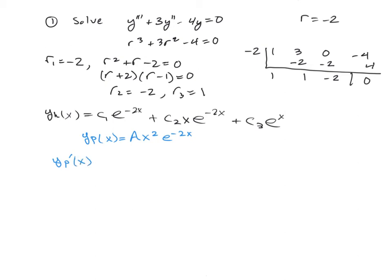Alright, so now first derivative using product rule. That's 2axe to the negative 2x plus ax squared negative 2e to the negative 2x. Which is going to be equal to a negative 2ax squared plus a 2ax. And this is, again, times the e to the negative 2x.